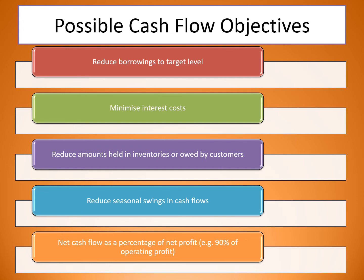Possible cash flow objectives would include: reduce borrowings to target levels — not borrowing too much from outside sources such as banks or suppliers — to minimize interest costs; consolidating loans into one to get a lower overall interest rate; reduce amounts held in inventories or owed by customers — linking to lean production — to improve cash flow by selling off unwanted assets or collecting in what customers owe; reduce seasonal swings in cash flow to maintain a steady flow throughout the year; and maintaining net cash flow as a percentage of net profit — for example, 90% of operating profit available at any one time.